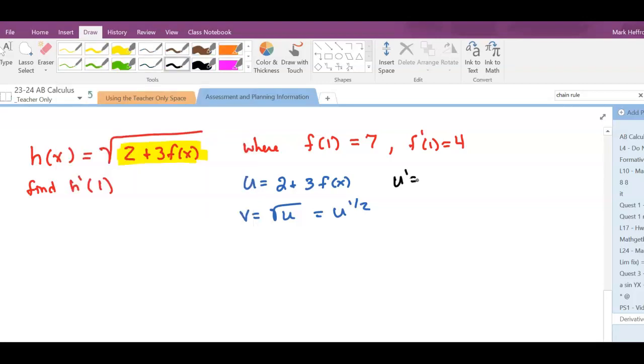Our u prime is then the derivative of 2 is 0, and this is just a coefficient, so I'm going to have 3 times whatever the derivative of f is, f prime of x, by v prime.